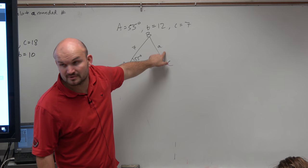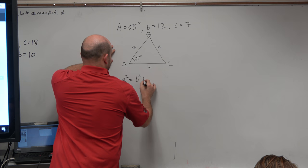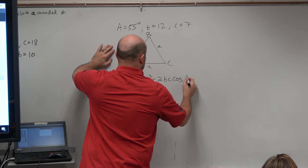So I'll just go ahead and write that out there. So I have a squared equals b squared plus c squared minus 2 times b times c times the cosine of A. That's your formula. Now let's just plug things in.